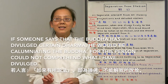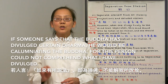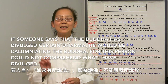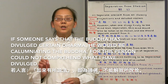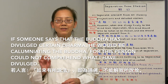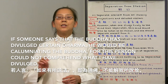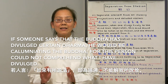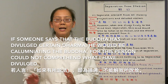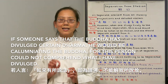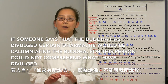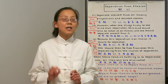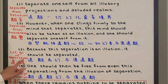In the Diamond Sutra, Buddha says if someone claims that the Buddha has divulged certain Dharma, he is slandering the Buddha, for that person could not comprehend what was divulged. So if someone says Buddha has a certain Dharma, he is slandering the Buddha because he does not know what the Dharma means. So let go of our attachment to the Dharma as well — it is illusory Dharma.